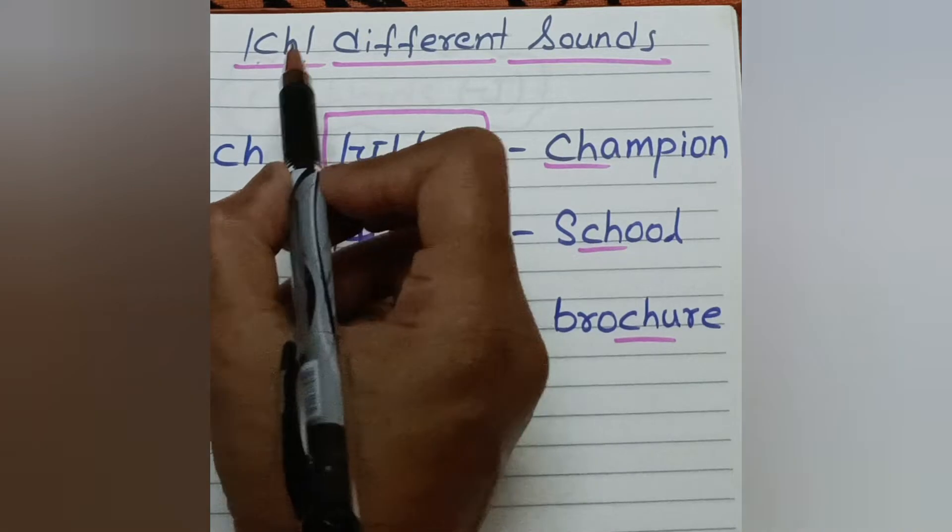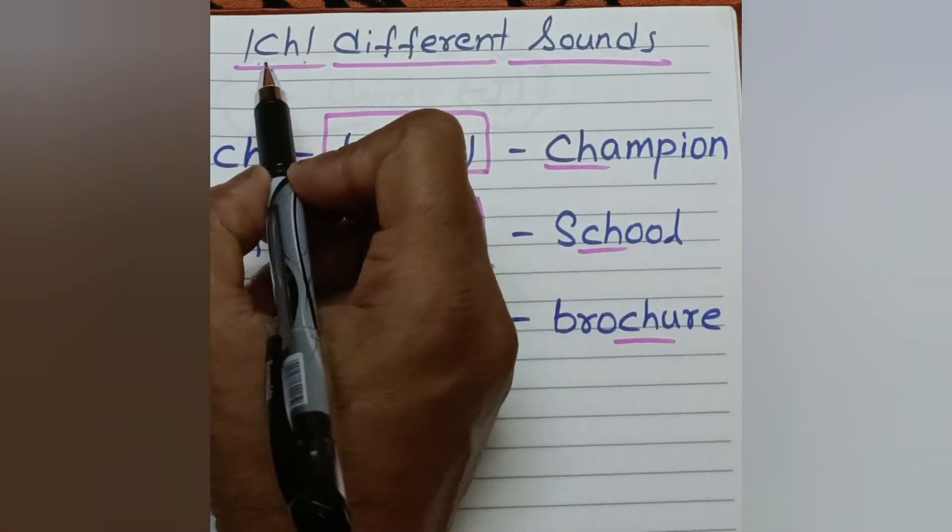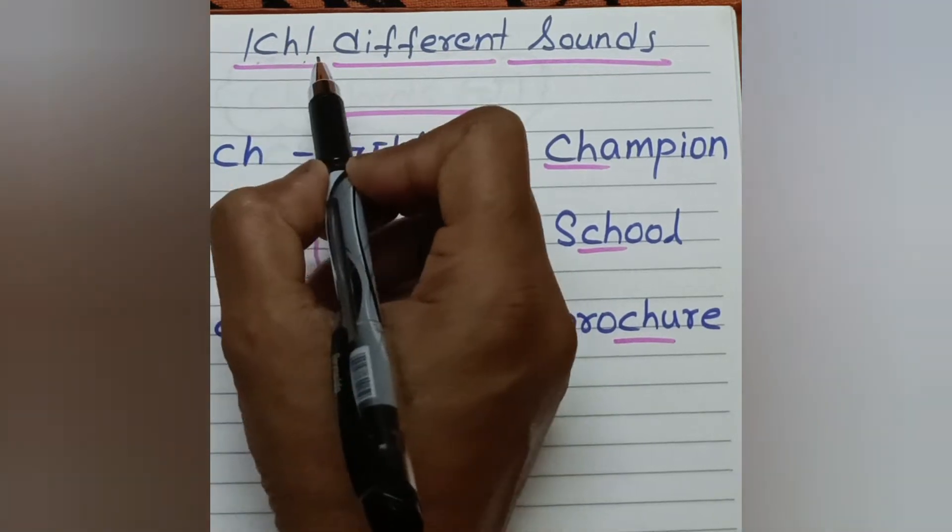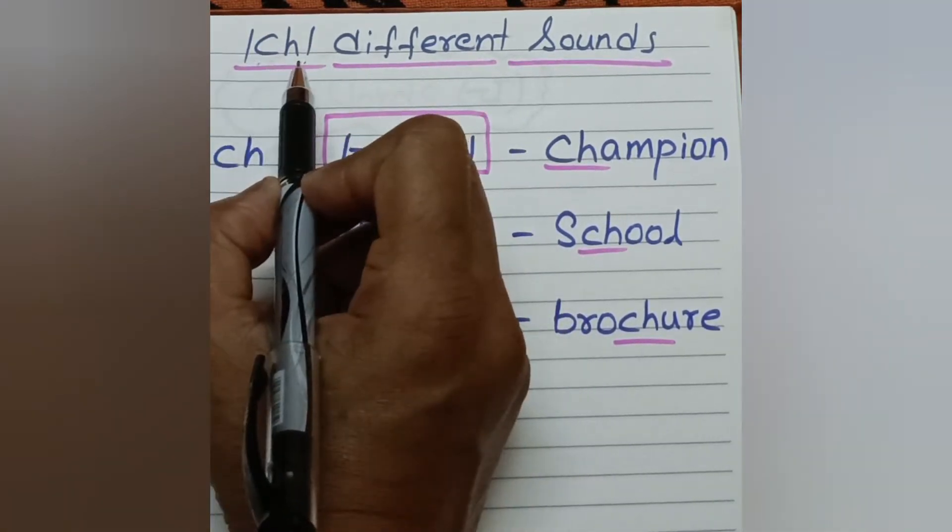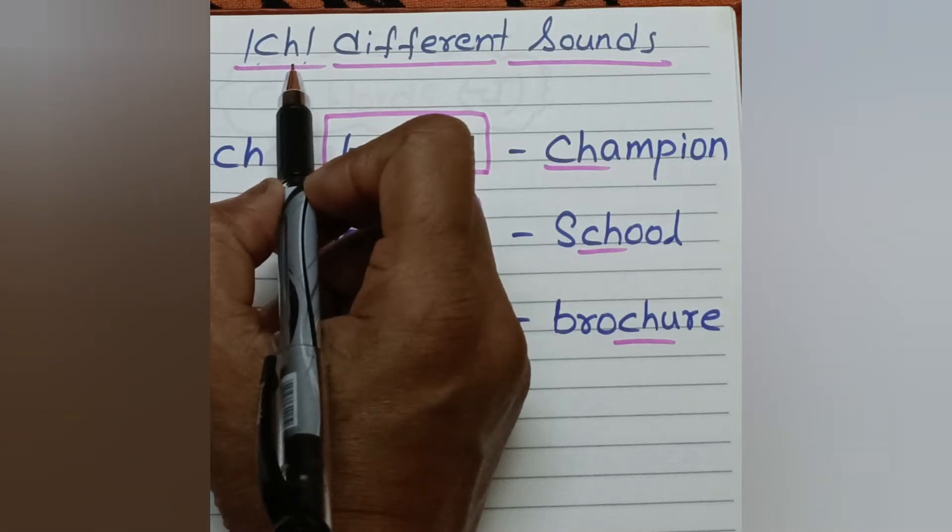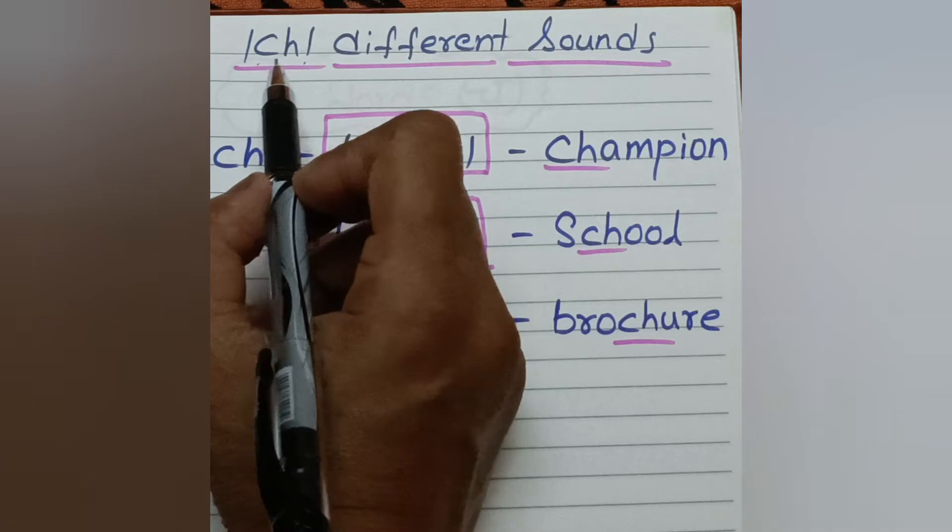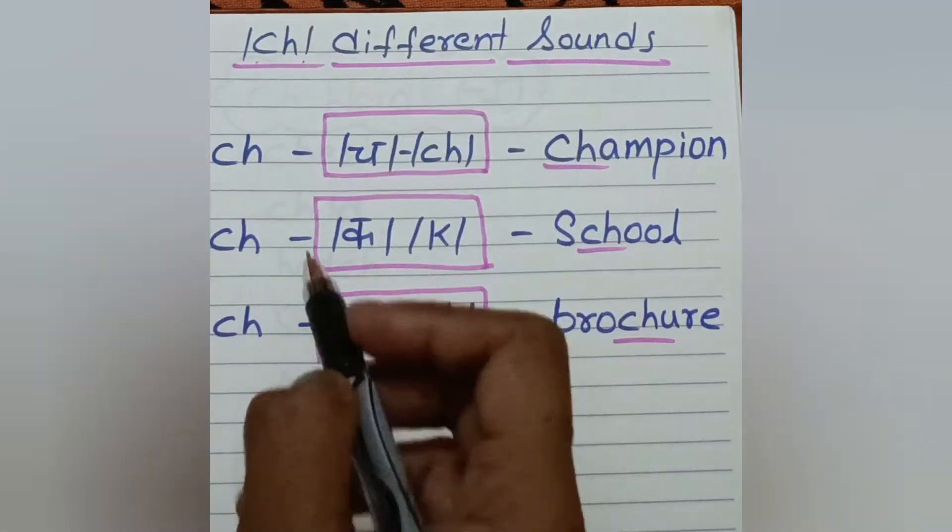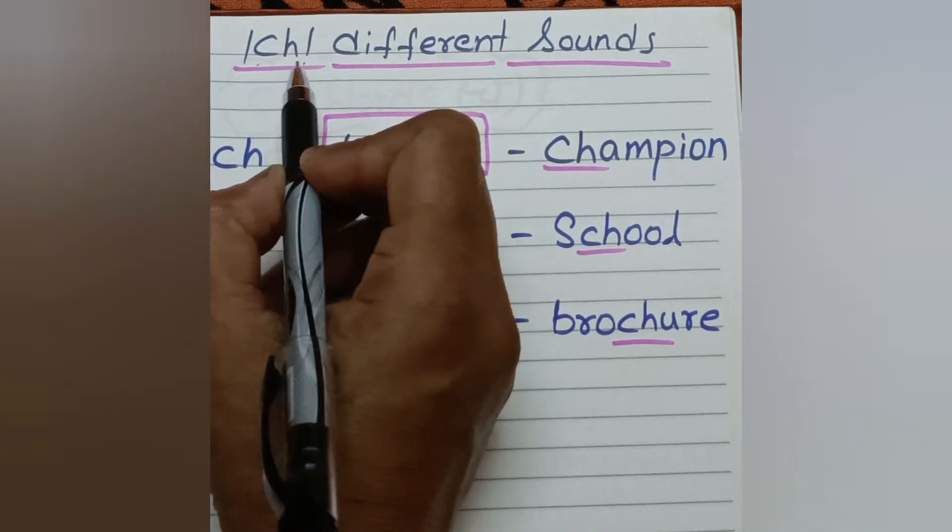Digraph means when two letters make a different sound. C sound is K, H sound is H. But if they mix together, they make a different sound which is CH. They don't make either K or H. In Senior KG, we teach CH sounds, CH digraphs.